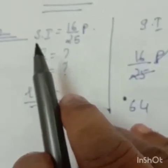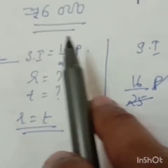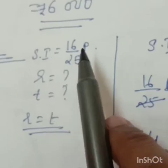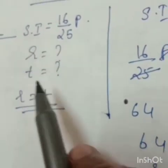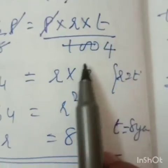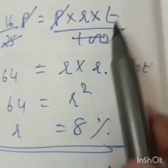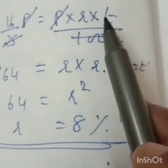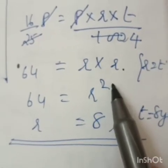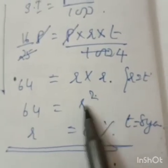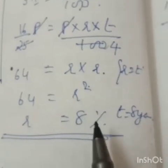Question number 12 solution: Simple interest equals 16 by 25 P, because in the question whatever the sum, 16 by 25 of the sum is the simple interest. Rate you don't know, time you don't know, but in the question rate and time are numerically equal. Put in the formula: simple interest equals PRT by 100. After cancelling P, and since R and T are the same, substitute T with R, giving R squared. R squared equals 64, so square root of 64 equals 8. Rate equals 8%, and therefore time also equals 8 years.